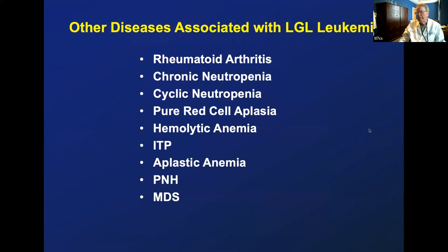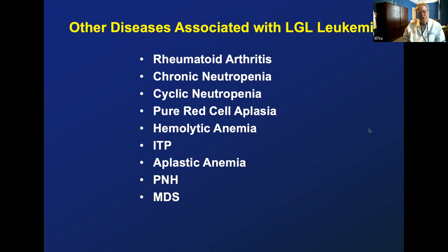Associated illnesses include classic rheumatoid arthritis and a number of cytopenias. Chronic neutropenia is probably the classic one. Adult-onset cyclic neutropenia is extremely rare, but all those patients have LGL leukemia. Pure red cell aplasia — the most common identified disease connected to PRCA is LGL. Other patients have hemolytic anemias. ITP can be seen; a recent Blood article showed that classic ITP patients have cytotoxic TEMRA T cells killing platelets, just like LGL cells. There's also a big overlap with marrow failure diseases like aplastic anemia, PNH, and some patients with MDS.